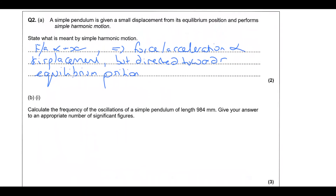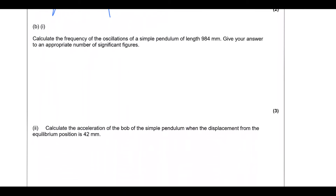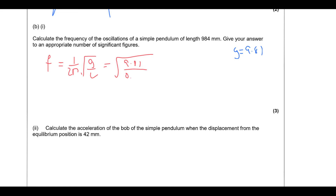Calculate the frequency of oscillation of a simple pendulum of length 9.84 mm, using g = 9.81. Both are given to three significant figures, so the answer should also be to three significant figures. The frequency formula is f = (1/2π)·√(g/L), the inverse of the time period equation. Putting in 9.81 ÷ 0.984 m, then × 1/(2π), gives 0.503 Hz. Preceding zeros are not significant, so this is correctly given to three significant figures.